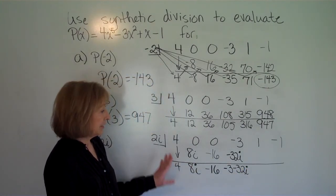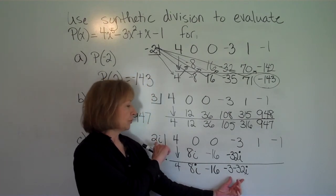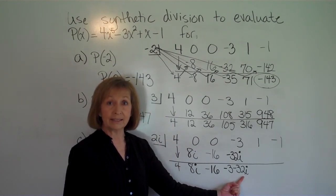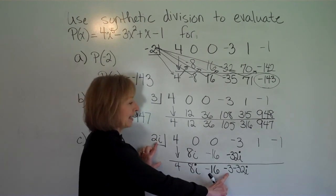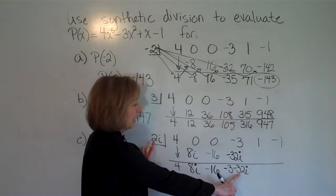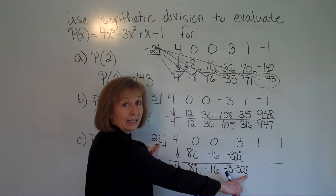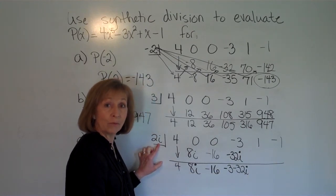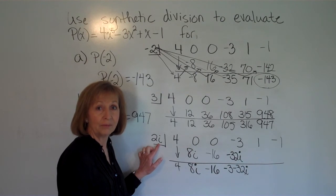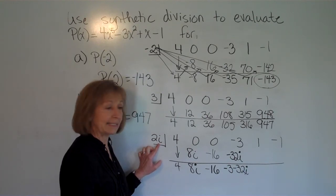Now we take 2i and multiply it to negative 3 minus 32i — 2i needs to distribute to each term, and remember that i squared is negative 1. So 2i times negative 3 is negative 6i. Then 2i times negative 32i is negative 64i squared, but i squared is negative 1, so negative 64 times negative 1 is positive 64. We like to write the real part first and then the imaginary part, so we write this as 64 minus 6i.